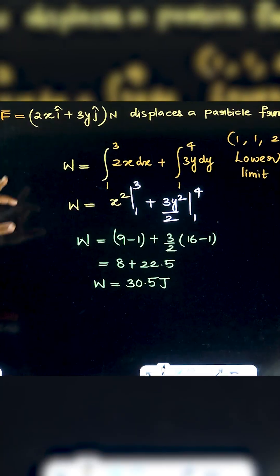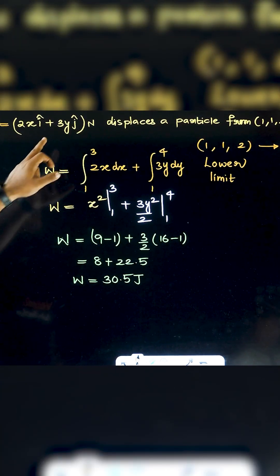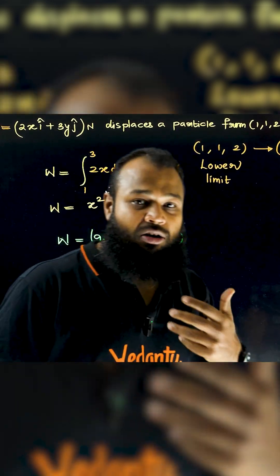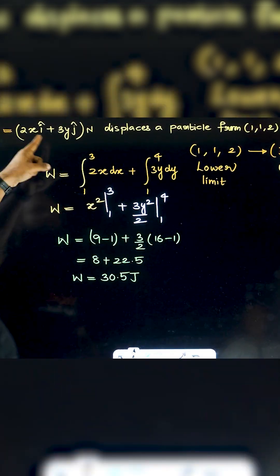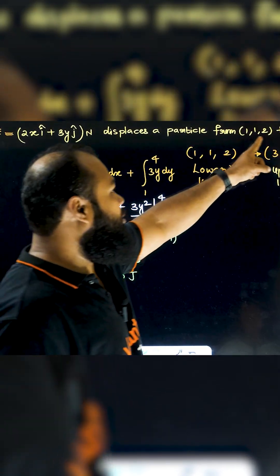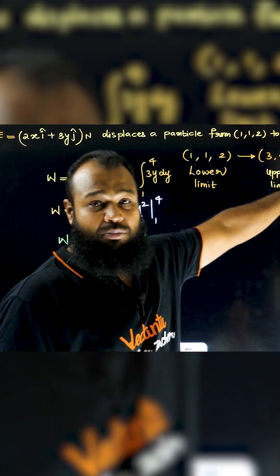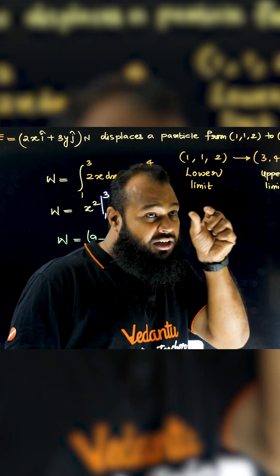For example, if F = 2x i-cap + 3y j-cap, the force is variable as it depends on x and y. This displaces a particle, and you have to find the integration of all the amounts of work.